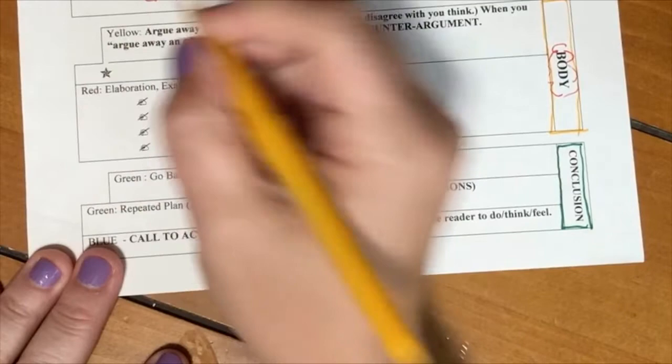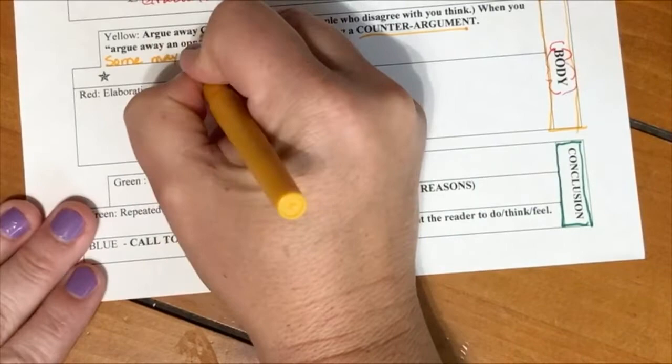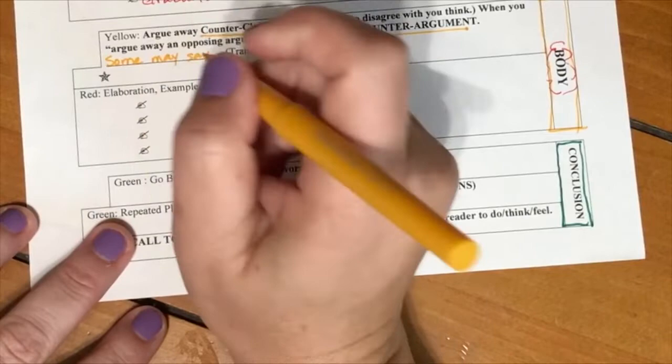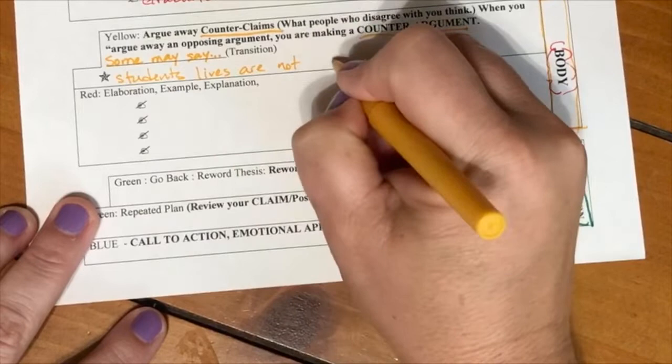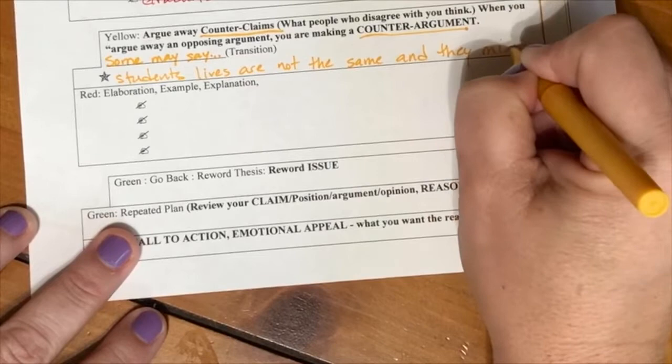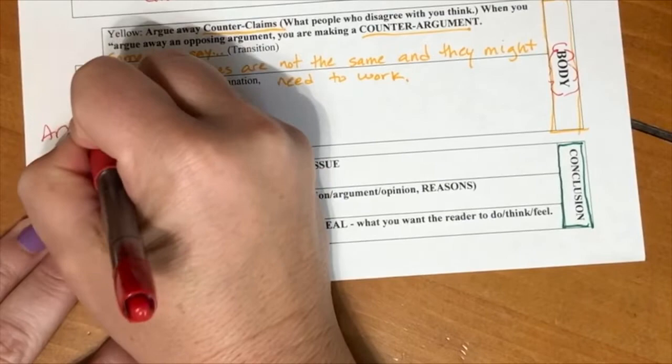The most important part that you are supposed to work towards in eighth grade and improve on is looking for counterclaims, arguing those away with a counterargument. The transition might be like some may say or others may argue. Some may say that students' lives are not all the same and they may need to work. There's other counterclaims you could use for this essay. You could say that some may say requiring students to stay in school is going to cause discipline problems because kids don't want to be there. Whichever one you choose to argue against, you can put multiple counterarguments in. No one's saying you can't, but you just have to have at least one.